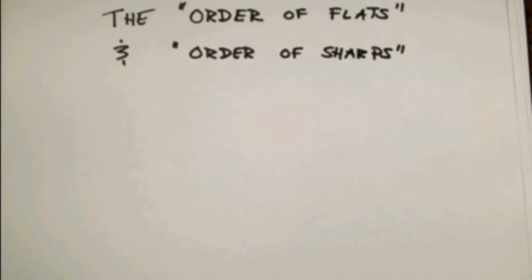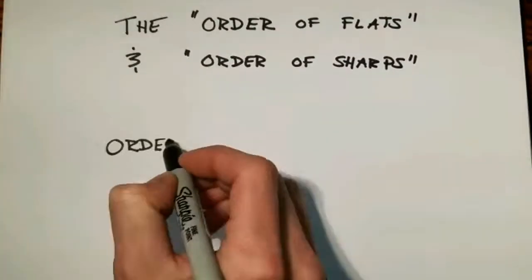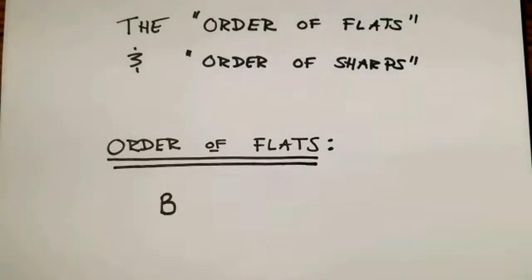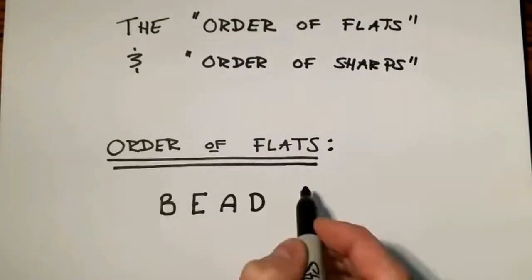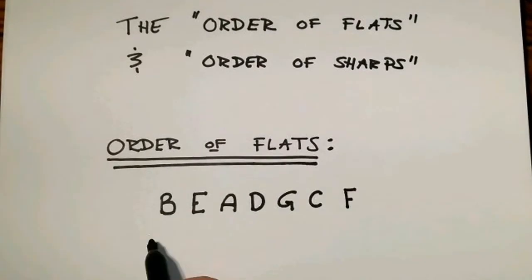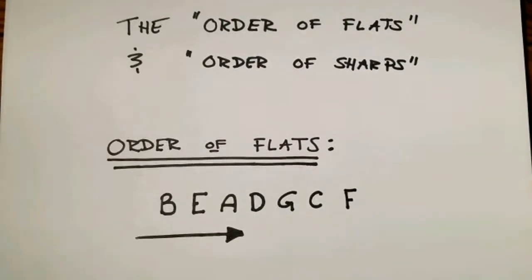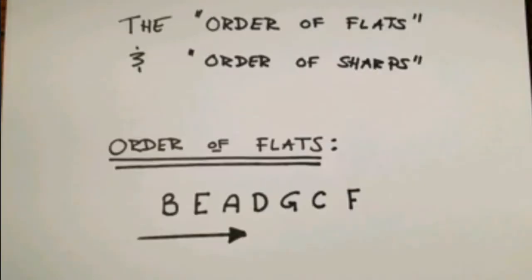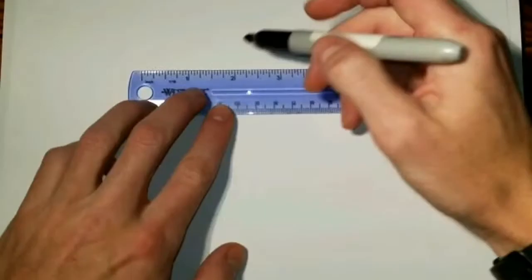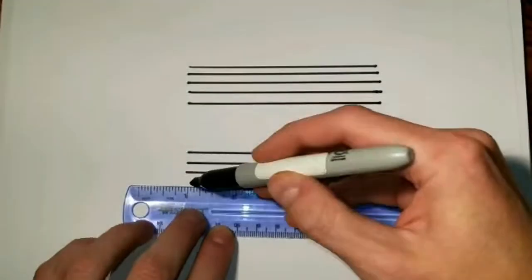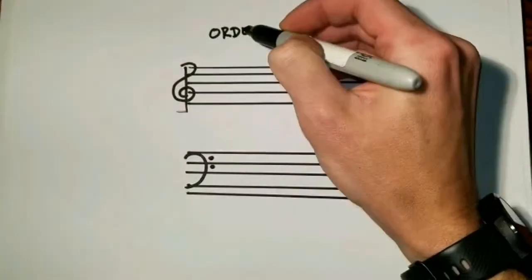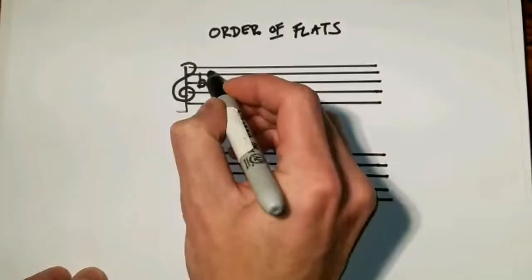Now, the order of flats is just what it sounds like. It's the order in which flats appear in a key signature. And the rule of the order of flats says that the flats always appear in a key signature in the exact same way every time. It's so predictable that if you tell a musician how many flats you have in a key signature without showing it to them, they will be able to tell you which ones they are every single time. The order in which the flats appear is B-flat, E-flat, A-flat, D-flat, G-flat, C-flat, and F-flat. And that's really important. You're going to want to memorize that.